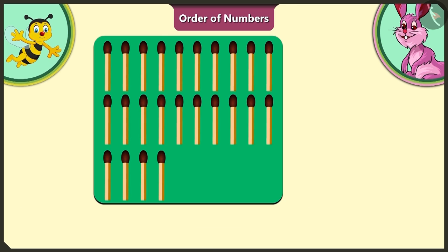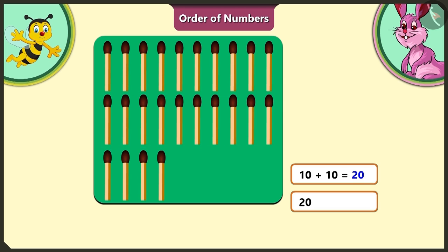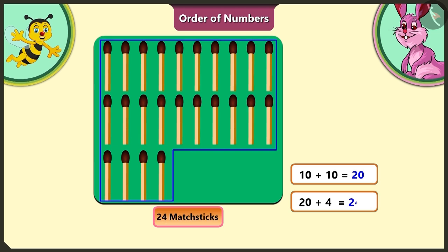Can you tell me how many matchsticks are there on the green card? The first group of matchsticks on the green card has 1, 2, 3, 4, 5, 6, 7, 8, 9, 10 matchsticks. If we add the next group to the first group of 10, there will be 20 matchsticks. And adding these 4 remaining matchsticks gives us 24 matchsticks in total.